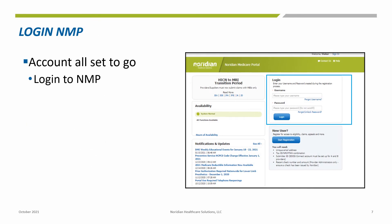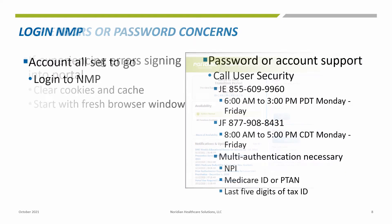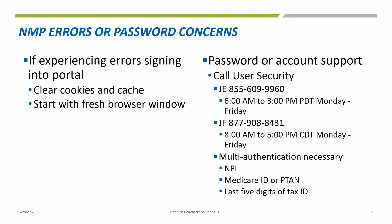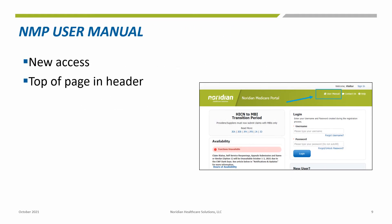Once the approval has been completed, you may now log into the account and perform different operations based on your needs. For NMP errors or password issues, contact information is listed for password or account support. Have your multi-factor authentication ready, which is your NPI, your Medicare PTAN, and the last five digits of your tax ID. For your convenience, a link to the NMP user manual has been added to the header of the portal.